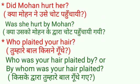अब यहाँ एक example है yes/no interrogative sentence का। Interrogative sentences दो तरह के होते हैं — अगर आपने वो वीडियो नहीं देखा तो types of sentences का वीडियो देख लें। Yes/no वाले past tense interrogative 'did' से start होते हैं, तो passive में 'did' से start नहीं करते — helping verb से start करते हैं। 'Was she hurt by Mohan?' — 'hurt' तीनों forms में same होता है। Meaning: क्या उसको Mohan के द्वारा चोट पहुँचाई गई?